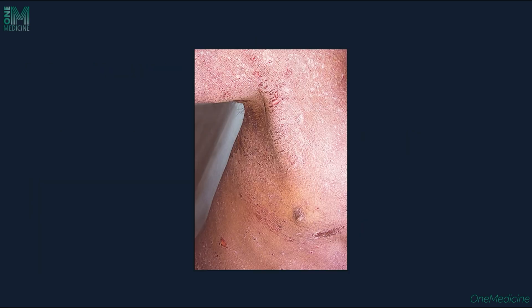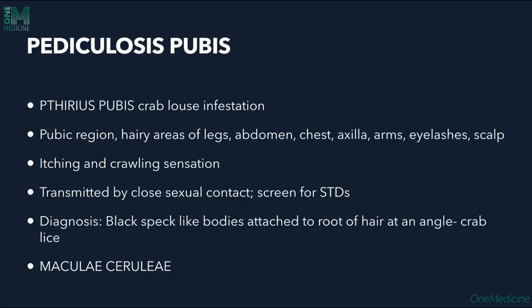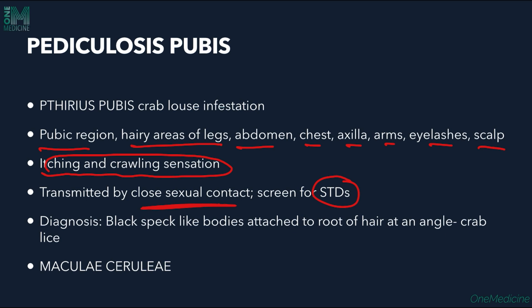Pediculosis pubis is also called Phthirus pubis, caused by crab louse infestation. The pubic region, hairy areas of the legs, abdomen, chest, axilla, arms, eyelashes, and scalp can be involved. Itching and crawling sensation are seen. It is transmitted by close sexual contact, so screening for other sexually transmitted diseases is also required.